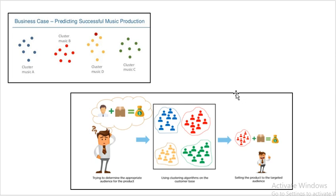To summarize the three important concepts: regression is supervised learning used when the target variable is a continuous numeric value. Classification is supervised learning used when the target variable consists of categories or classes such as yes/no or one/two/three. Clustering is unsupervised learning used to group data based on similar attributes. That is all for this tutorial — thank you very much.